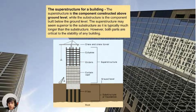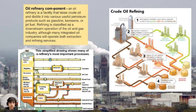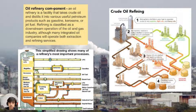The superstructure is made up mostly of metals and cement. Next, oil refinery components — an oil refinery is a facility that takes crude oil and distills it into various useful petroleum products such as gasoline, kerosene, or jet fuels. Refining is classified as a downstream operation of the oil and gas industry, although many integrated oil companies operate both extraction and refining.